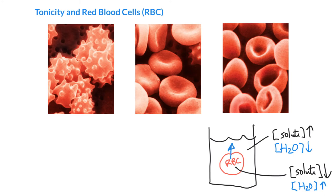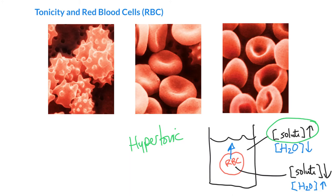So essentially osmosis is the diffusion of the small solvent molecules that can fit through the membrane. And if the red blood cell is losing water, it is going to shrivel up. We can see the red blood cells have really kind of shriveled up at this point — this is definitely not good for them. This kind of solution, where the concentration of solute is high compared to what's on the inside, we refer to as hypertonic.